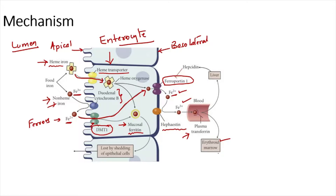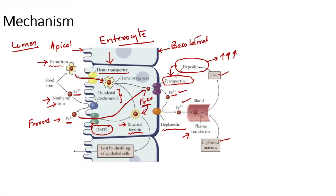The efflux of iron from the duodenal enterocyte is regulated by an important compound called hepcidin, produced by the liver. Whenever hepcidin levels increase, it causes down-regulation or degradation of ferroportin 1 from the basolateral membrane of the enterocyte. Since ferroportin 1 is the only efflux route of iron from the enterocyte, when it is down-regulated, iron gets trapped inside the enterocyte and is converted into its storage form — ferritin.